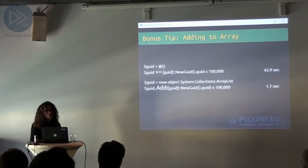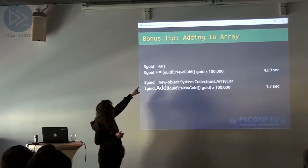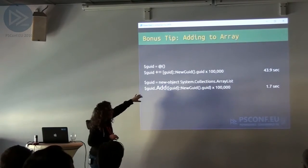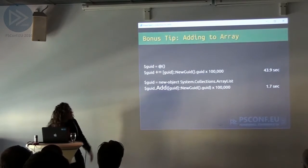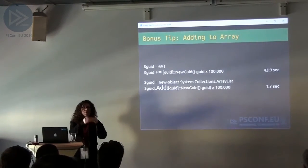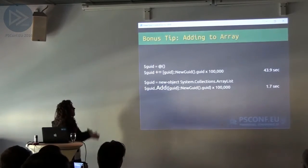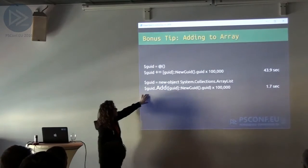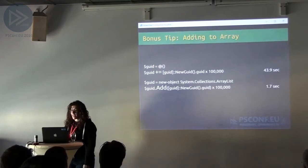I learned this about two weeks ago from Steven Owens' blog post about speed. That plus-equals thing is so cool, but it takes 43.9 seconds because it rebuilds the array each and every time. If you use .Add() instead and make it an ArrayList, it goes from 43 seconds to 1.7 seconds.